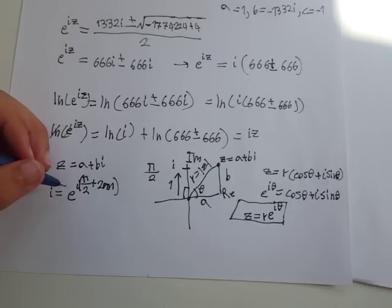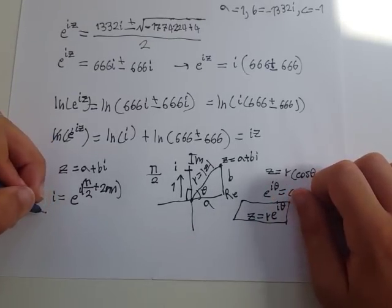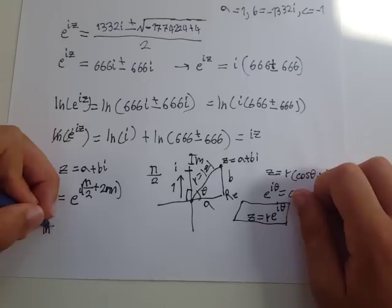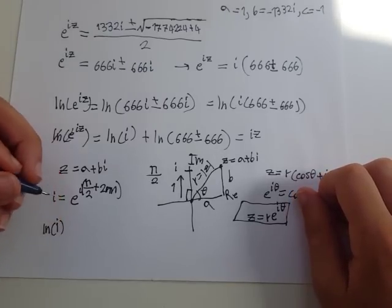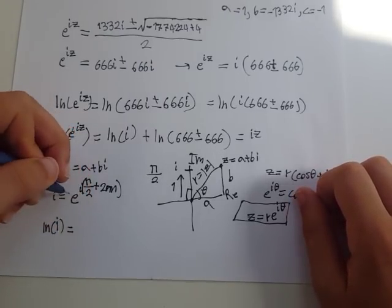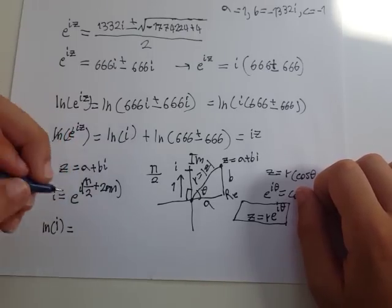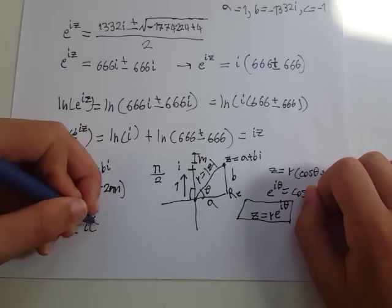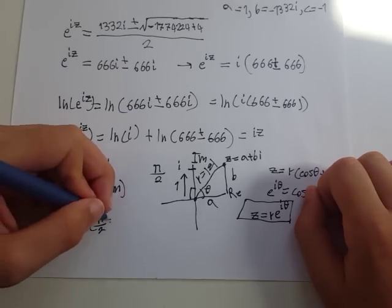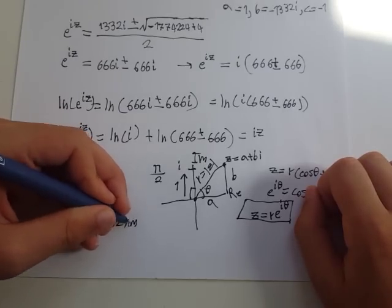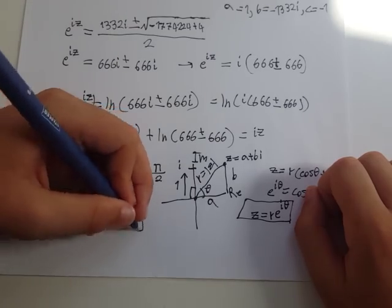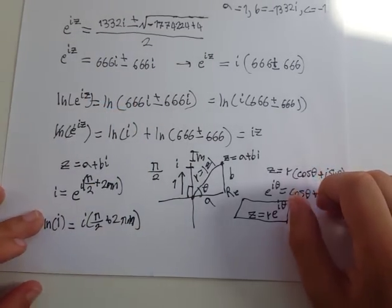Now that we know what this is, if we take the natural log of both sides to find what the natural log of i is, we see that natural log having e inside will cancel, so it leaves us only with the power: i times pi over 2 plus 2 pi n. So this is what natural log of i is.